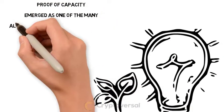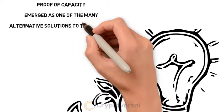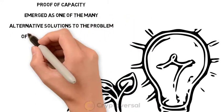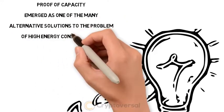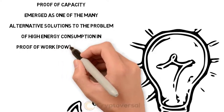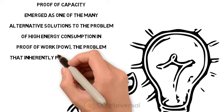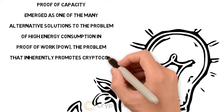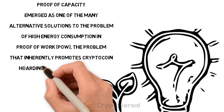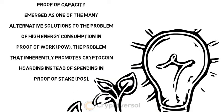Proof of Capacity emerged as one of the many alternative solutions to the problem of high energy consumption in Proof of Work, and the problem that inherently promotes crypto coin hoarding instead of spending in Proof of Stake.